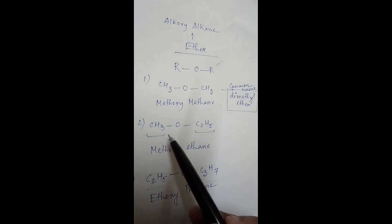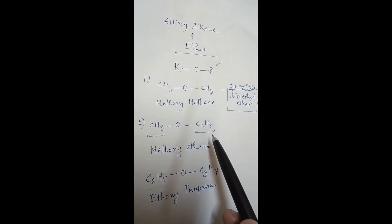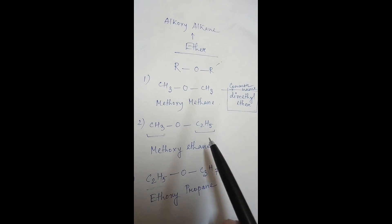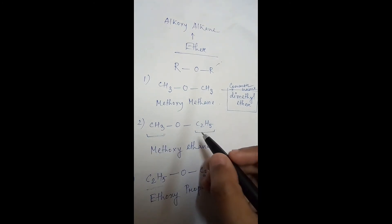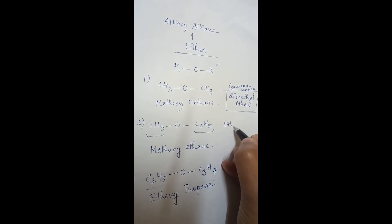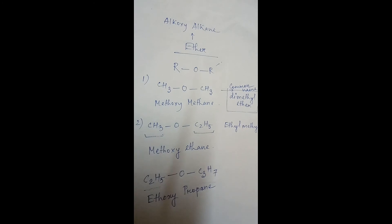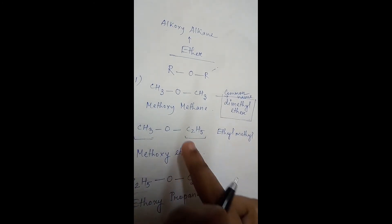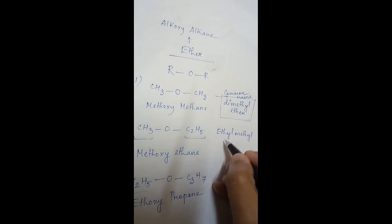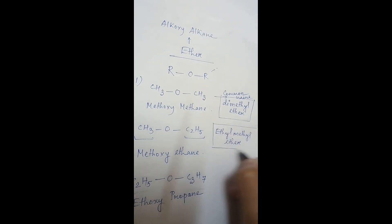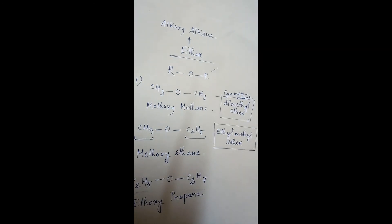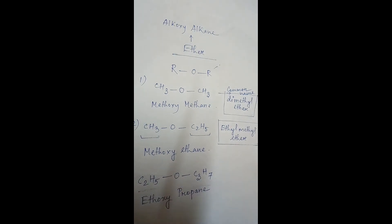For the second compound, one methyl group and one ethyl group are present. In alphabetical order, ethyl comes before methyl, so we write ethyl methyl ether — that is the common name. Similarly, for the last compound, the common name will be ethyl propyl ether. Thank you.